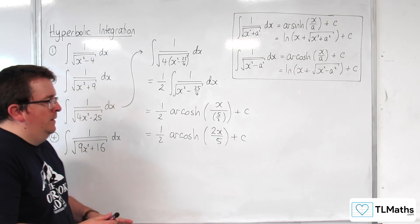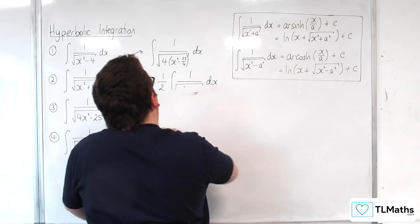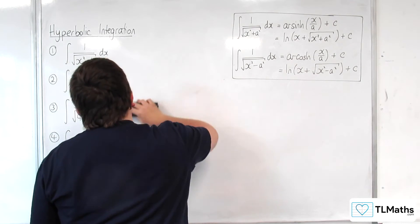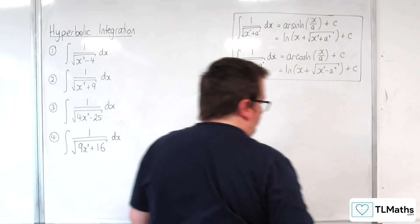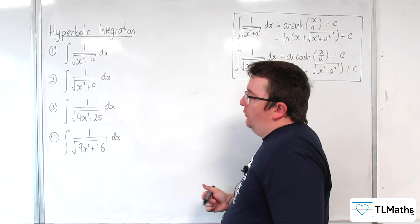Okay, so that's my integral for that one. Okay, so for number 4 we're going to have to use a similar trick. So we've got 1 over the square root of 9x squared plus 16.